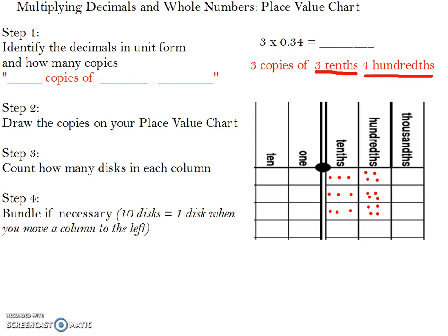Steps 3 and 4 can be combined. Step 3 is to count how many discs in each column, and as you're counting, you may need to bundle. And remember that when you're bundling, you're looking for 10 discs in 1 column, which can be regrouped and bundled into 1 disc when you move to the column to the left. I always start on the far right, so we're going to count how many.